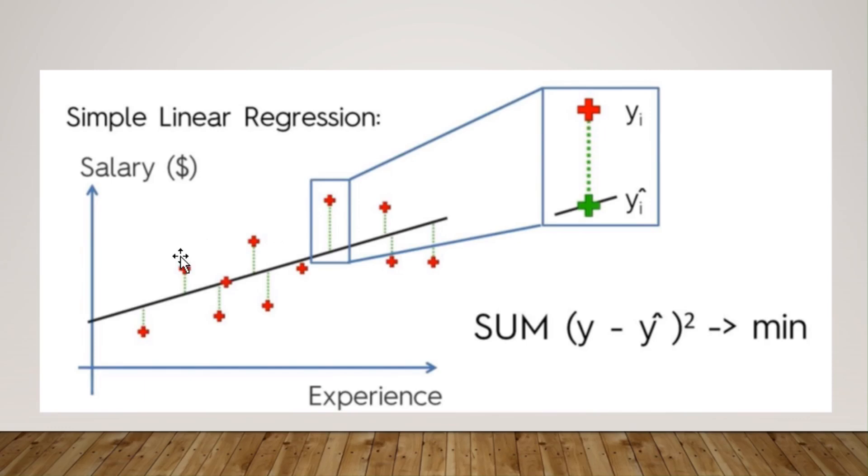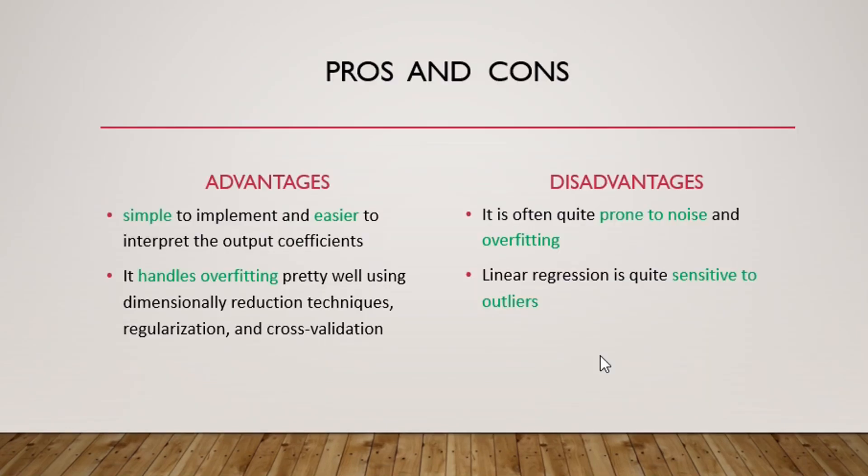So for the whole testing dataset, the accuracy is given as (y - y cap) whole square, which has to be minimum so that our prediction should be good.